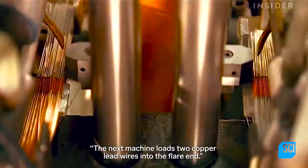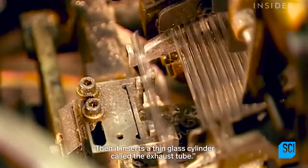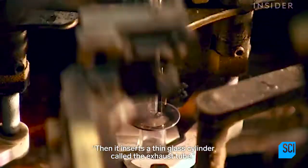The next machine loads two copper lead wires into the flare end, then it inserts a thin glass cylinder called the exhaust tube.